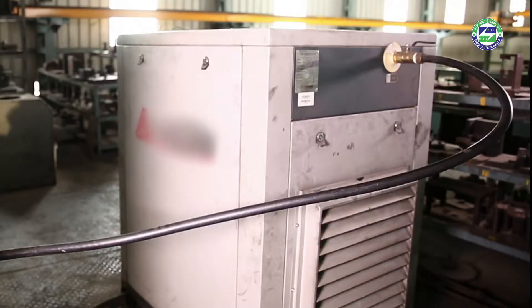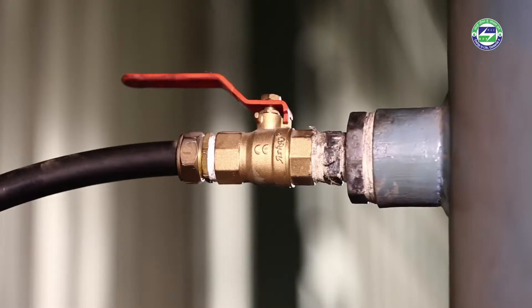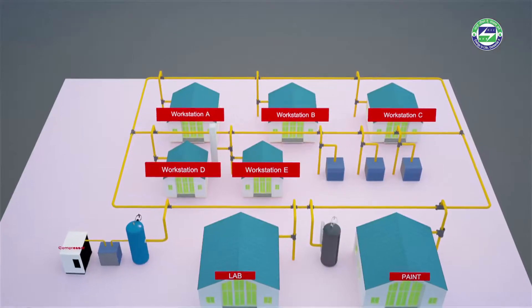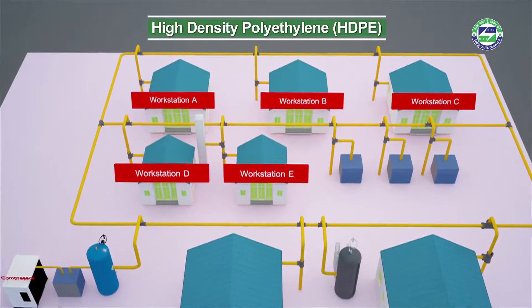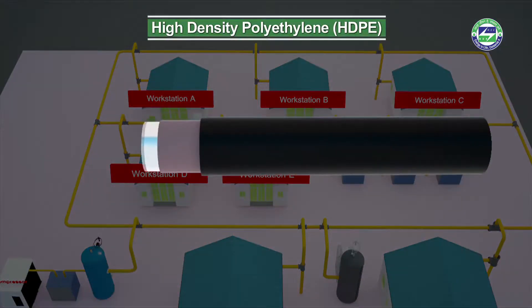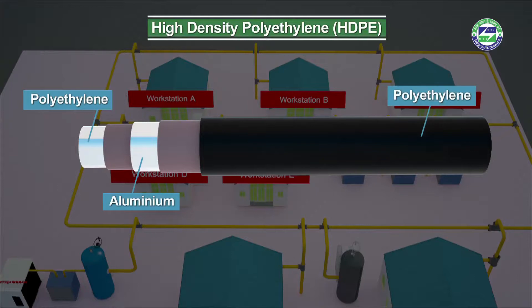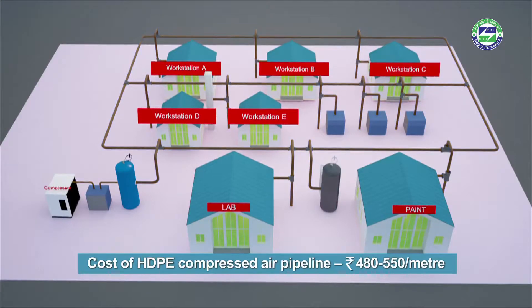In addition to piping network design, pipe material plays an important role in determining system efficiency. High-density polyethylene (HDPE) pipe is one such example increasingly used for efficient compressed air piping networks. An HDPE pipe consists of three layers: the innermost polyethylene layer, followed by a thin layer of aluminium, and an outer coating of polyethylene. The aluminium layer is bonded with the polyethylene layers using high quality adhesive.